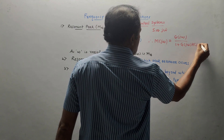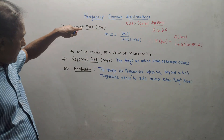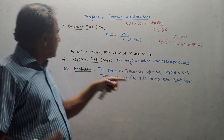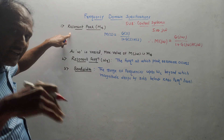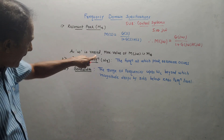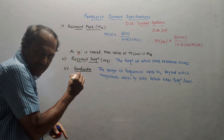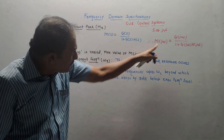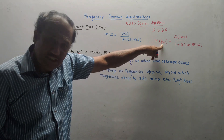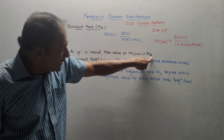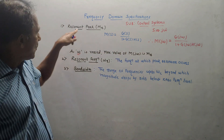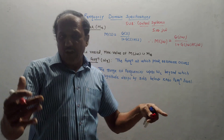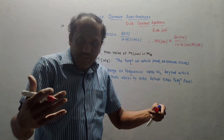What is the meaning of resonant peak? Peak means peak value, and resonant relates to resonance condition. As omega is varied — omega is the frequency — the maximum value of M(jω), that is the maximum value of the transfer function, is called Mr, the resonance peak. As you go on changing the frequency omega, at some value you will get the maximum value of the transfer function, which is called the resonant peak.